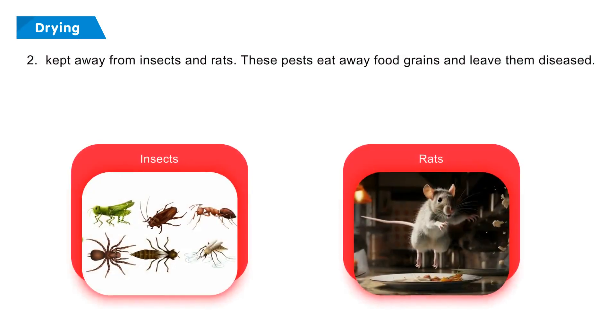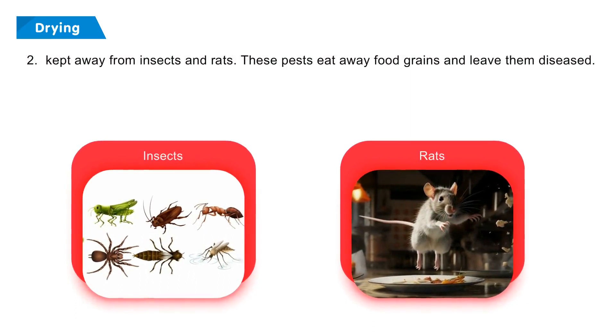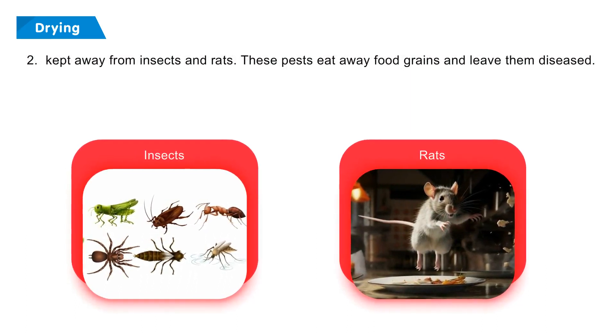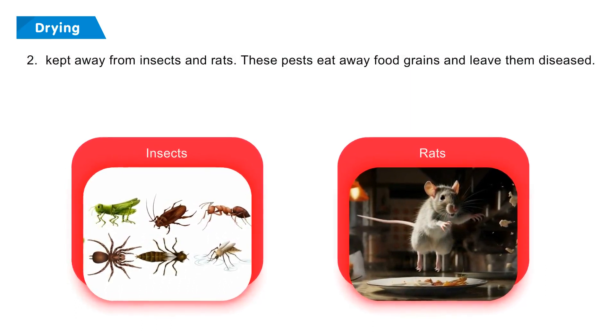Food grains must be kept away from insects and rats, as these pests eat away food grains and leave them diseased.